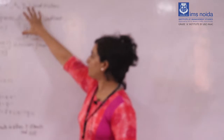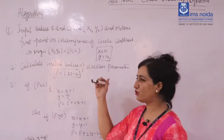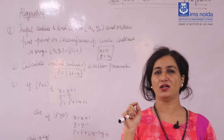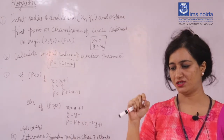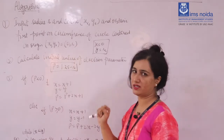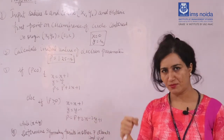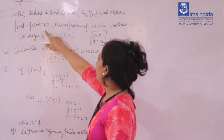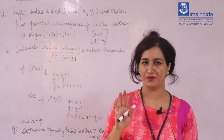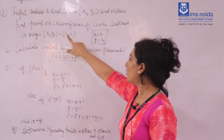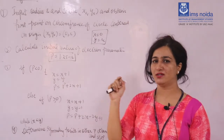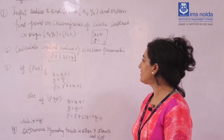Now let's read the midpoint circle algorithm step by step. Step 1: Input radius r — the radius is given in the question. Also input center (xc, yc), which may or may not be given. Then obtain the first point on the circumference centered at the origin: x₀, y₀ = (0, r). So x₀ is 0 by default and y₀ equals the radius r.